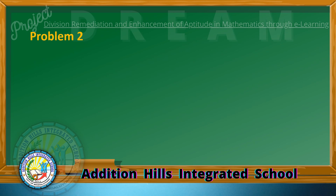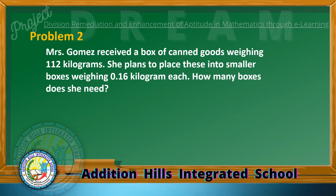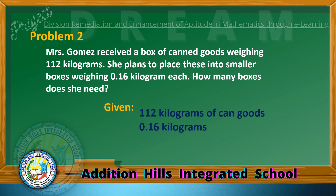Let's solve Problem Number 2. Mrs. Gomez received a box of canned goods weighing 112 kilograms. She plans to place these into smaller boxes weighing 1.6 kilograms each. How many boxes does she need? We write the given: 112 kilograms of canned goods, 1.6 kilograms per box.